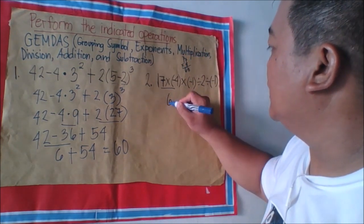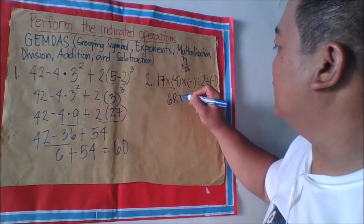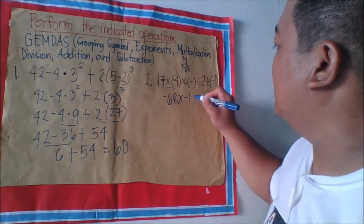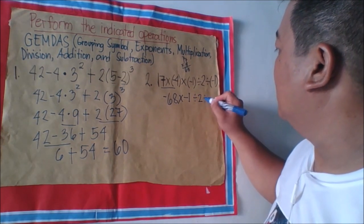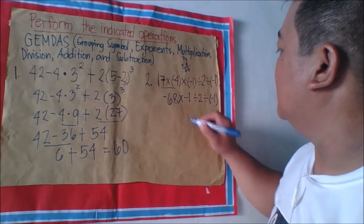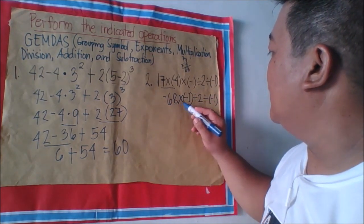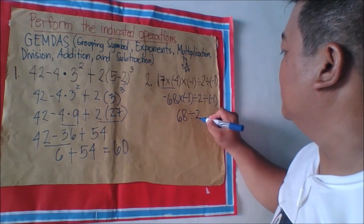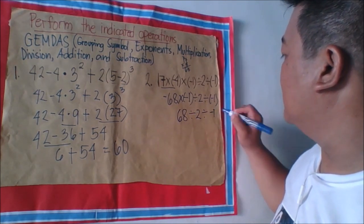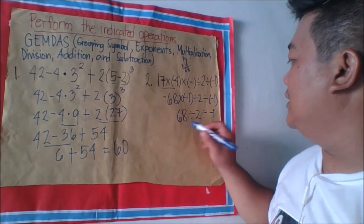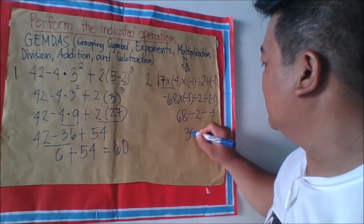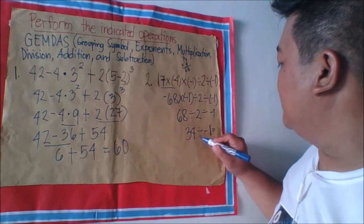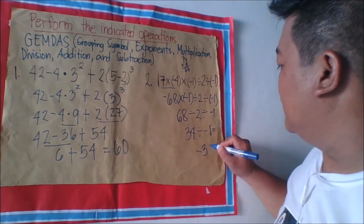17 times 4 equals 68. Since the signs are different, we have negative 68. Then negative 68 times negative 1 equals 68 — two negatives make a positive. Then 68 divided by 2 equals 34. Finally, 34 divided by negative 1 equals negative 34. So the answer is negative 34.